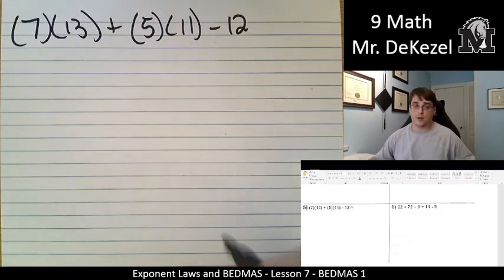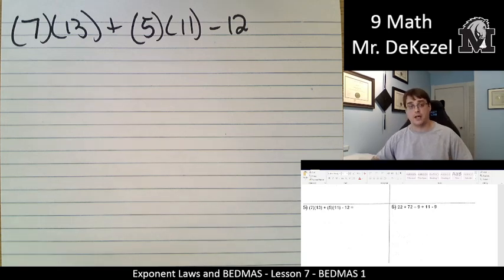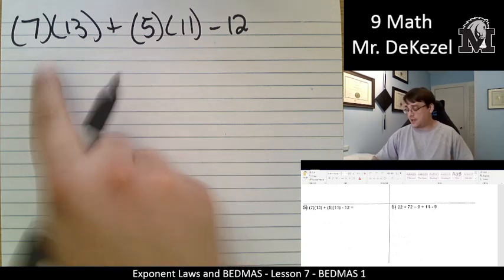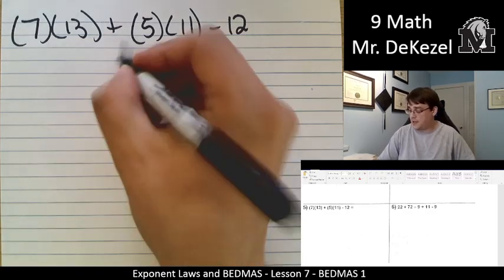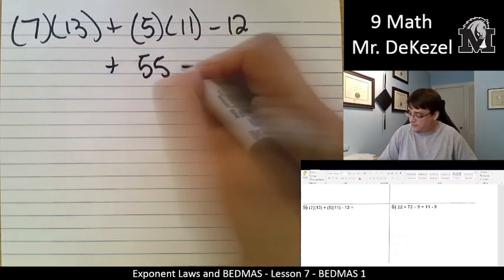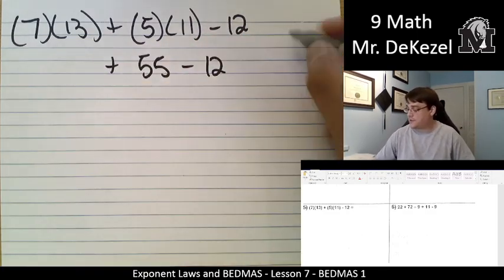7 in brackets and 13 in brackets plus 5 in brackets and 11 in brackets minus 12. So although there are brackets, there's nothing in brackets to do. These are just multiplied by each other. So let's do 7 times 13 and 5 times 11. So I know that this is 55. Let's just do that. 7 times 13.